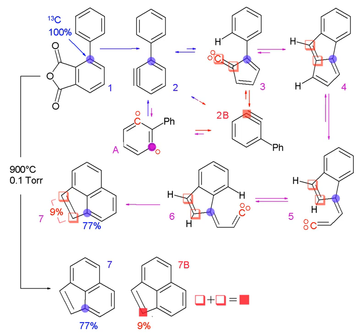Radioisotopic labeling is a technique for tracking the passage of a sample of substance through a system. The substance is labeled by including radionuclides in its chemical composition. When these decay, their presence can be determined by detecting the radiation emitted. Radioisotopic labeling is a special case of isotopic labeling. A particularly useful type of radioactive decay for these purposes is positron emission.